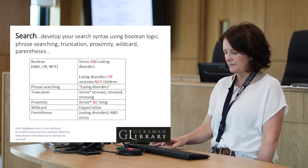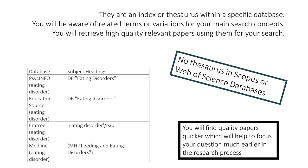Preparing for your search also involves using subject headings. They act as an index or thesaurus within a specific database and guide you to related terms for your key topics, helping you retrieve high quality papers. Note that there is no thesaurus or indexing in Scopus or Web of Science. For example, in PsycINFO the subject heading is 'eating disorders,' whereas in MEDLINE it is termed 'feeding and eating disorders.'